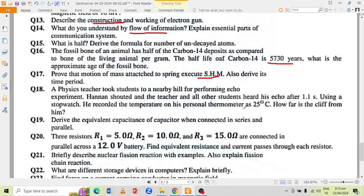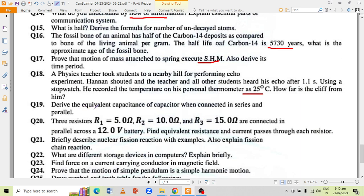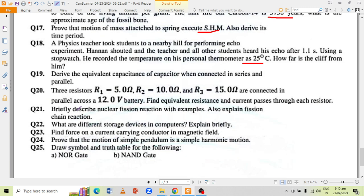Derive the equivalent capacitance of capacitor when connected in series and parallel. Three resistors H1 = 5 ohm, H2 = 10 ohm, and H3 = 15 ohm are connected in series across a battery. Find equivalent resistance and current passes through each resistor.